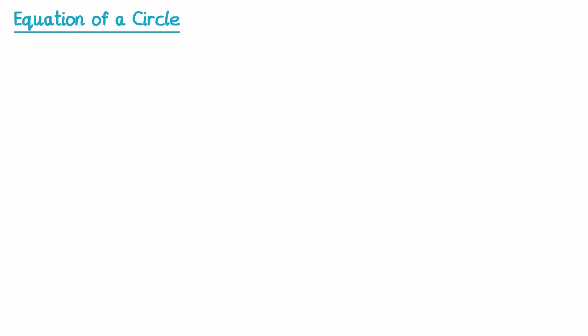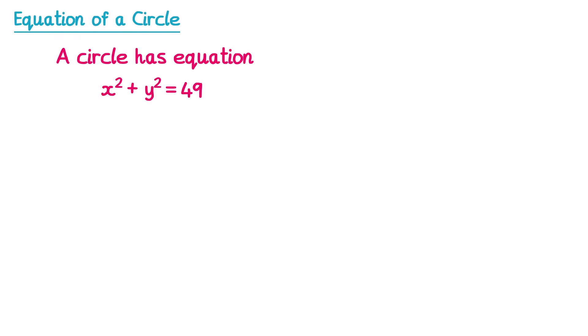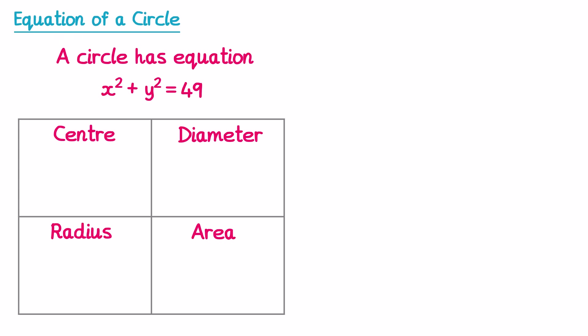Sometimes questions don't have a graph at all. They may give you an equation like x² + y² = 49 and ask you to find information about it. To complete a table of information, I'll rewrite it as x² + y² = r². The square root of 49 is 7, so it's x² + y² = 7². When an equation is in this form, it's a circle with centre at the origin (0, 0), the radius is 7, and the diameter is double the radius — so double 7 gives 14.